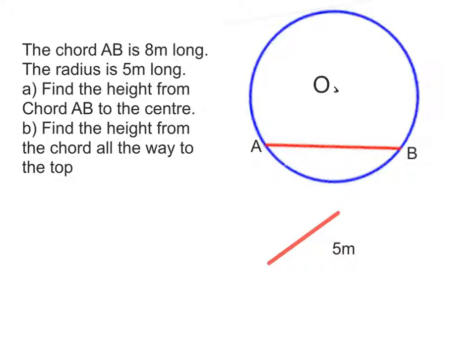So first let's put on a radius. So I'm going to do it from A to O. We know that's 5 meters there. Well, as we said from before, I can draw a line straight down and it will make a right angle and split this into two. So if AB is 8 meters, the distance from A to, let's call that M for middle, is 4.